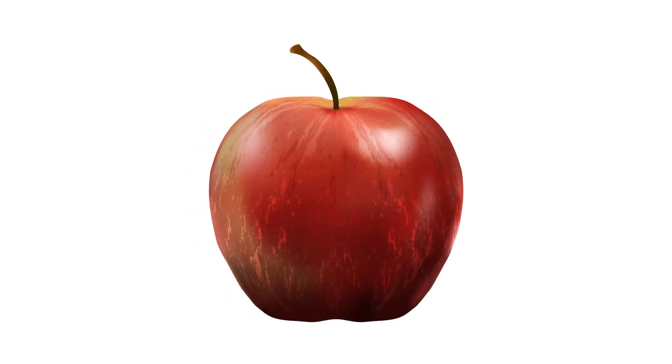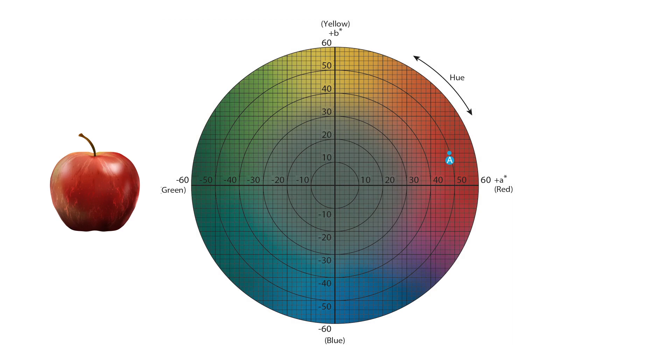If we measure an apple using the CIE LAB color space, we will obtain the following values. L star equals 43.31, A star equals 47.63, B star equals 14.12. By plotting the values on the color space, we can see that the apple has a vivid color with red hue.